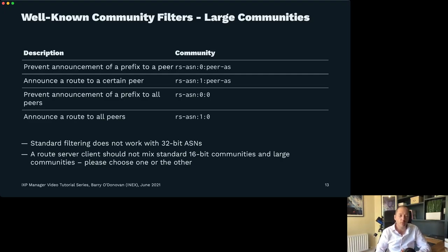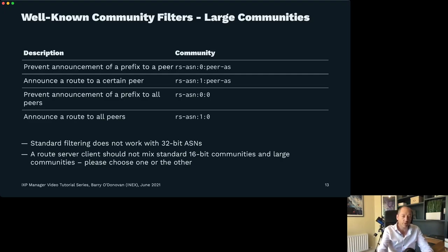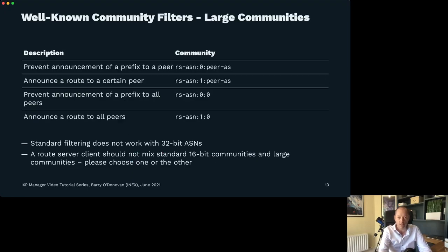A few years ago we got large communities. A standard 16-bit community is a 16-bit number colon a 16-bit number. Large communities — whose RFC was championed by Job Snijders — are a 32-bit number colon a 32-bit number colon a 32-bit number: a 32-bit triplet. This allows us to do a lot more, because 32-bit AS numbers have become hugely popular. With standard 16-bit community filtering we can't affect any 32-bit AS number. Now we can do that with large communities.